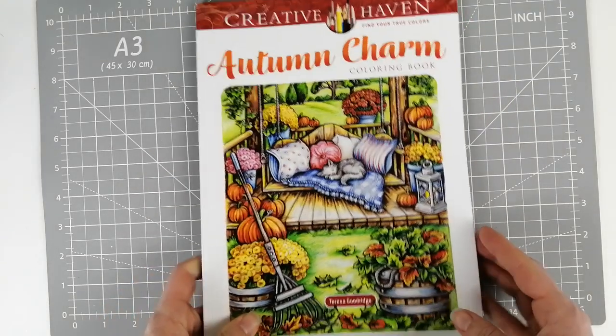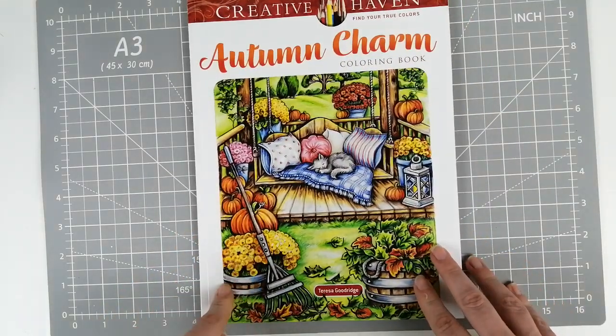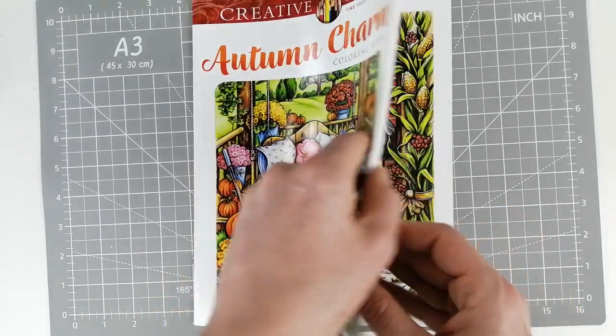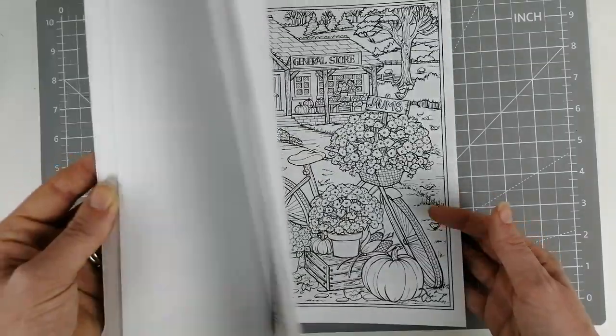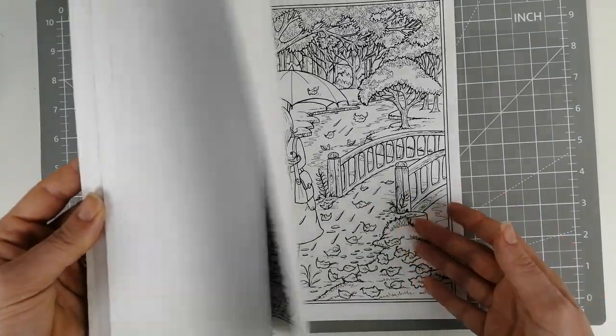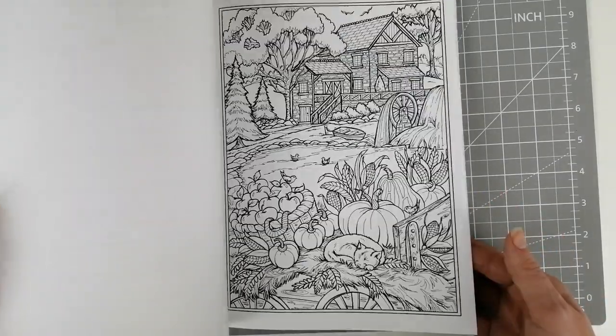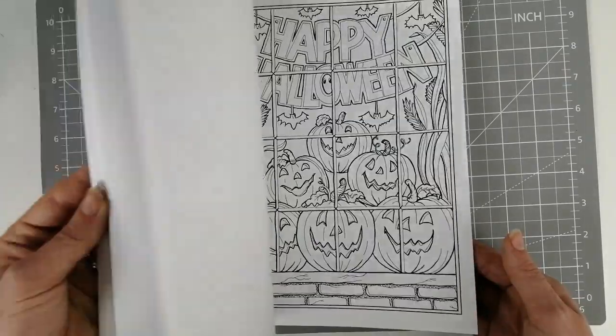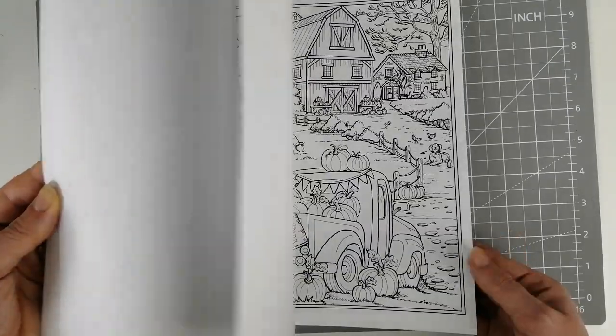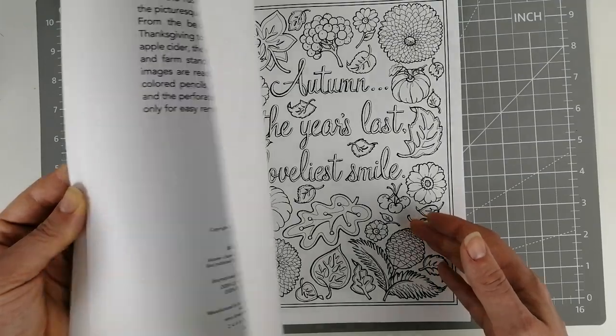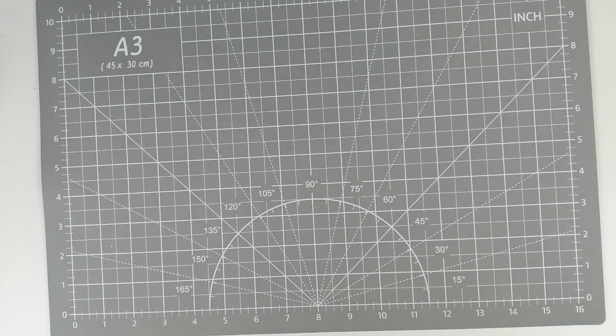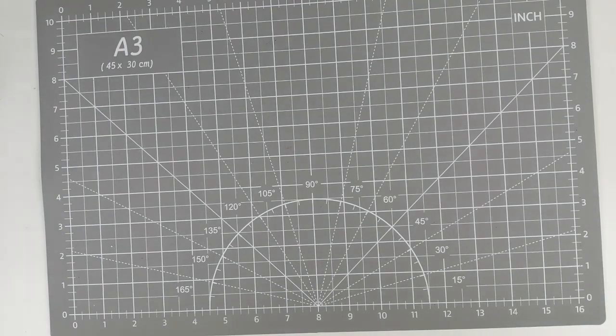Then I got this Creative Haven. This just came out in the UK yesterday, the 29th of October, and this is Autumn Charm by Theresa Goodridge. Out of the Creative Haven books, she does tend to be my favorite. I have been slowly trying to, when I put a few things in my basket, chuck one of these in because they're usually very affordable. They've got that slightly nicer than Amazon paper to them.